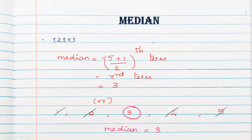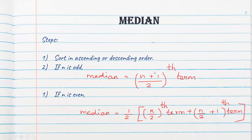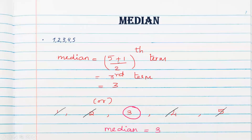For the data 1, 2, 3, 4, 5 — should I sort it? Not required because it is already sorted. How many observations are here? 5 observations. What is the formula? (n+1)/2 th term. So (5+1)/2 = 6/2 = 3rd term. What is the third term here? 1, 2, 3 — the third term is the median, and that is 3. For the same data, when we found mean it was 3, and median is also 3. As a shortcut, cancel the outermost terms from both ends — the middle term remaining is 3.